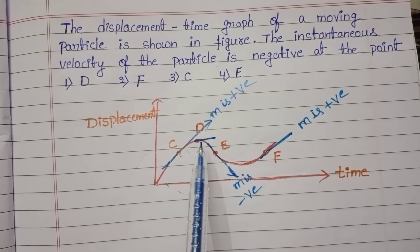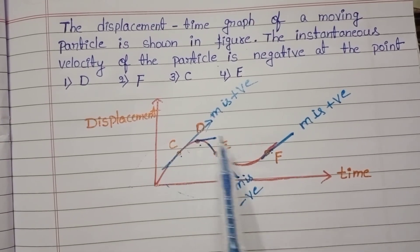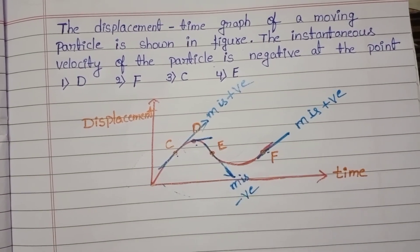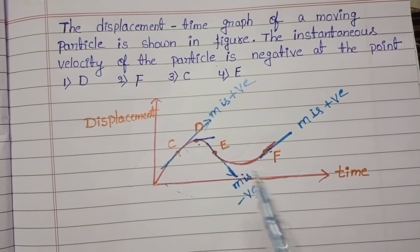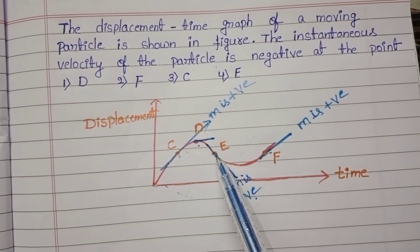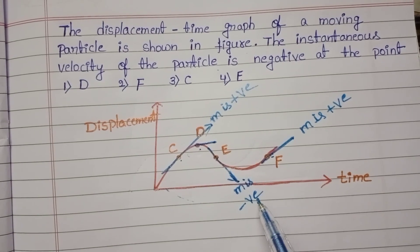So here at C, D and F, at these three points, slope is positive. So at E point, slope is negative. So the instantaneous velocity at E point is negative.